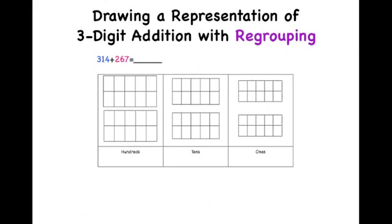Next, let's draw a representation of a three-digit addition problem with regrouping. Let's look at the equation 314 plus 267. We'll start by drawing the number 314 using blue. 314 has three hundreds, one ten, and four ones.